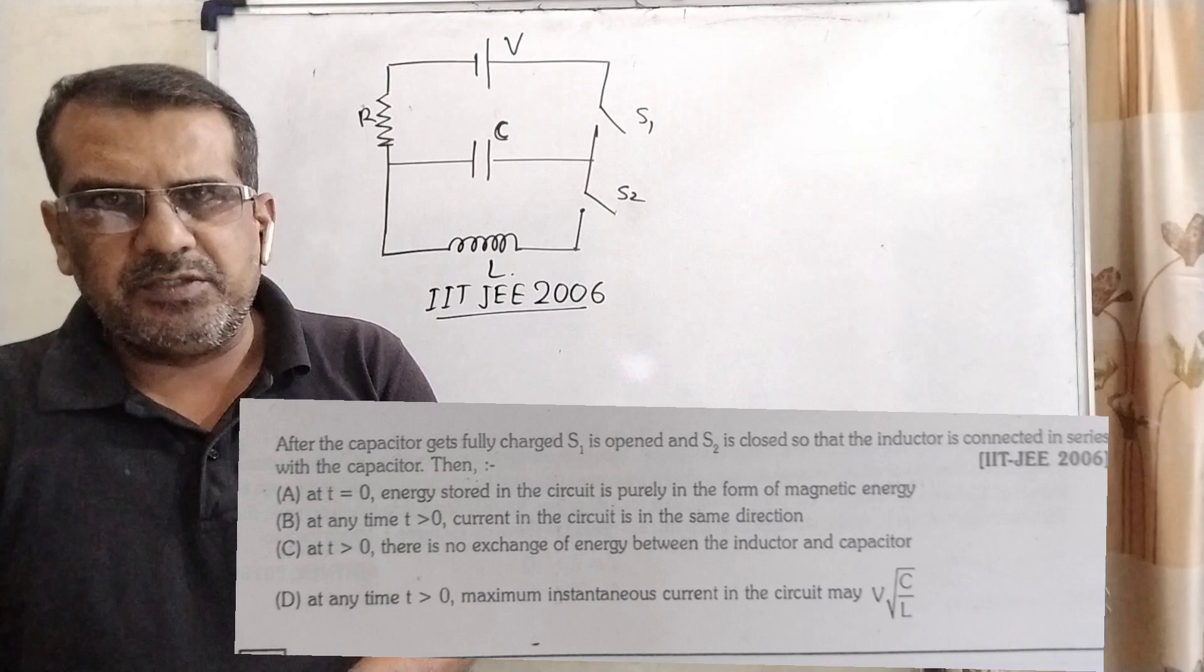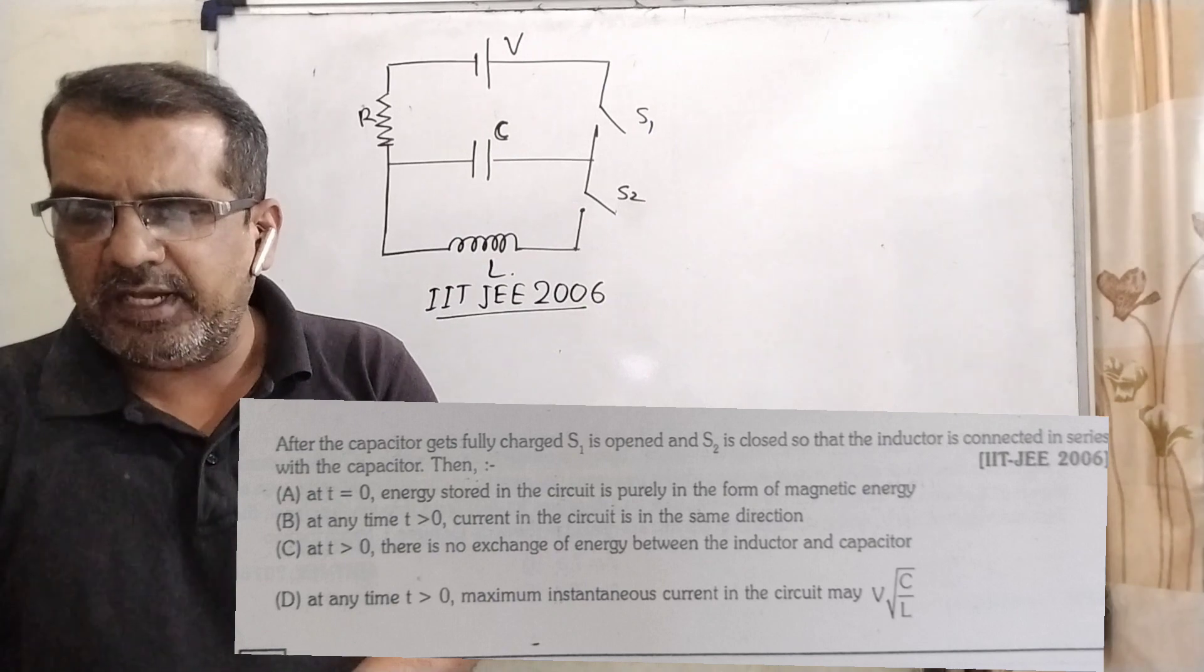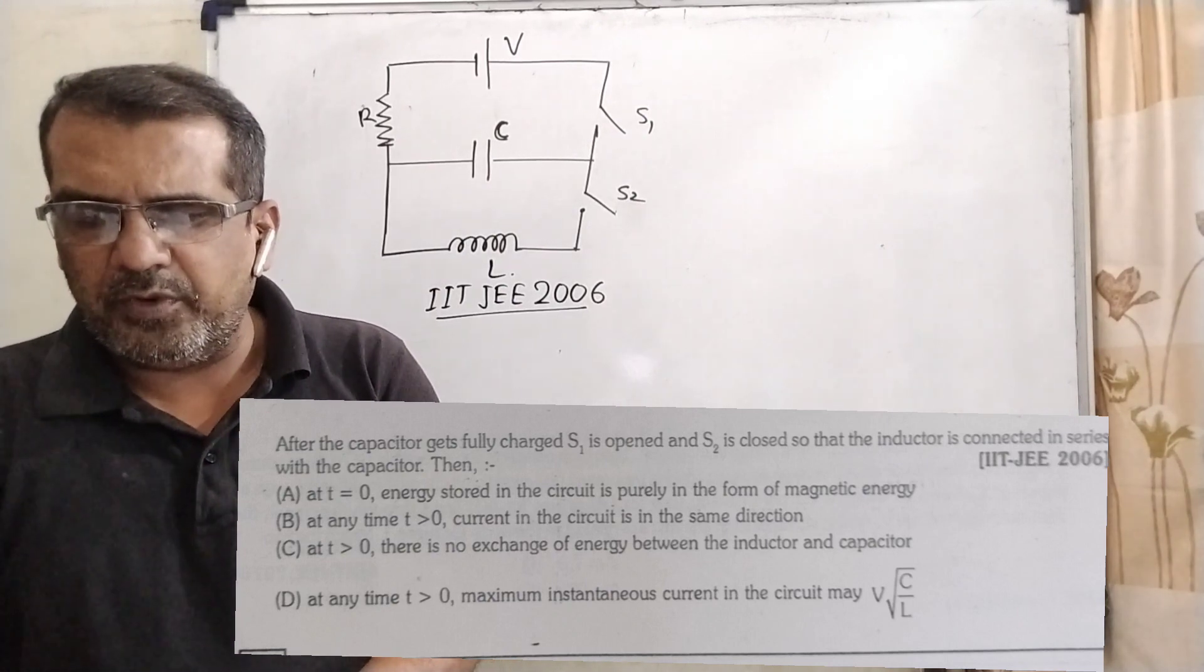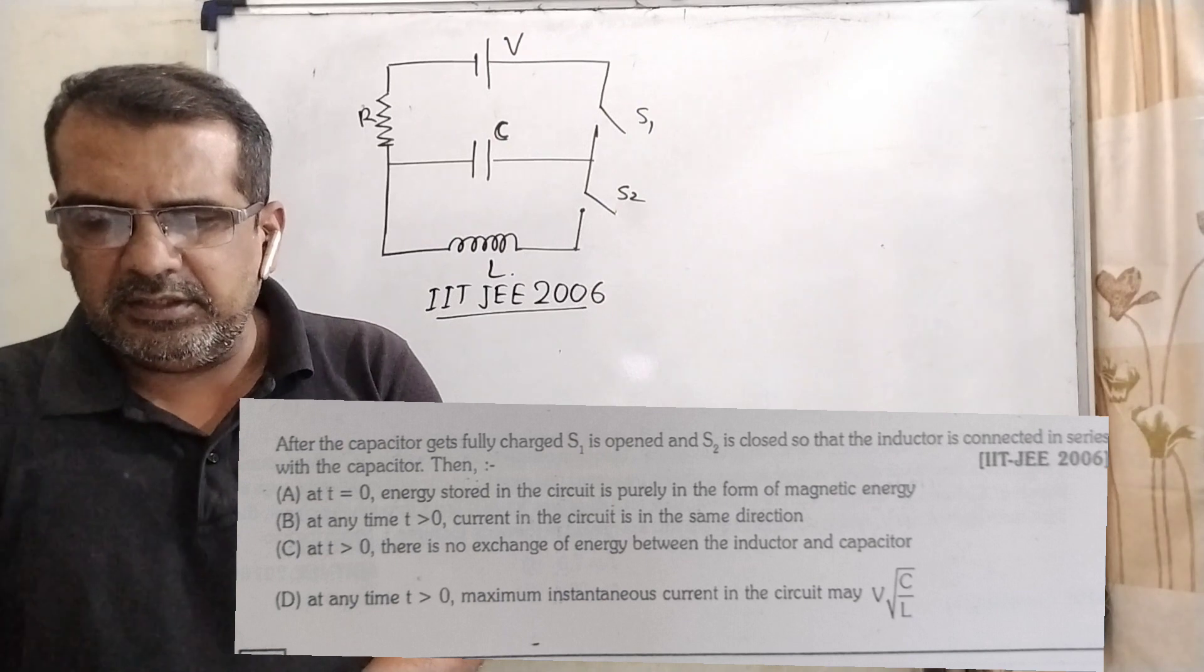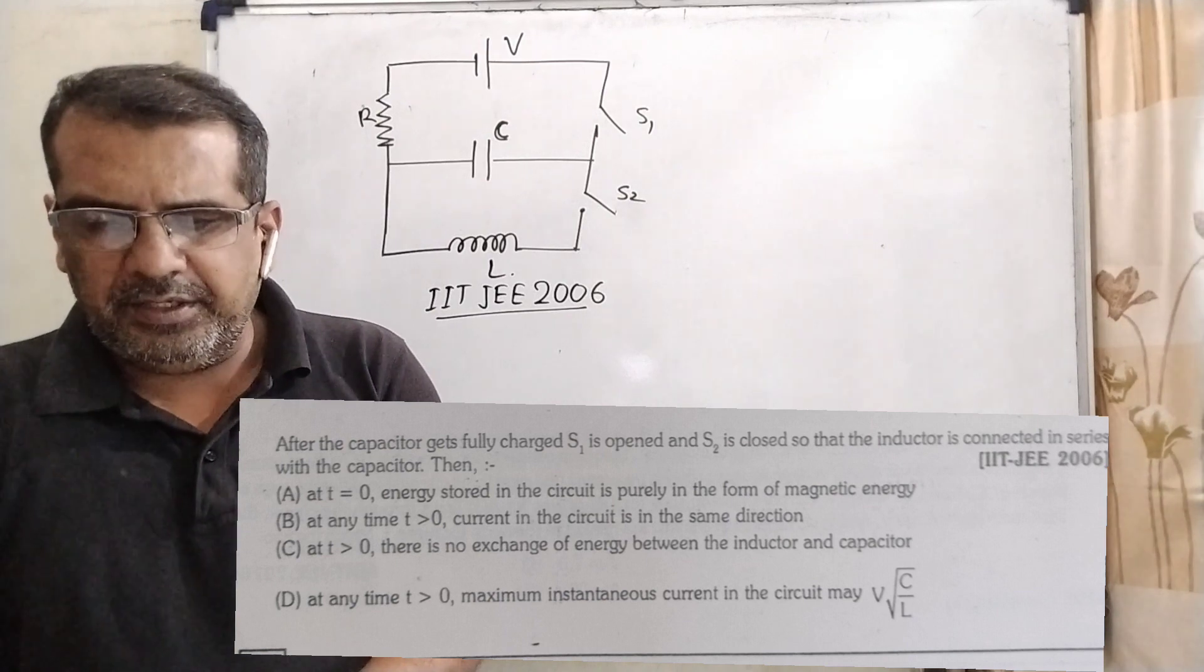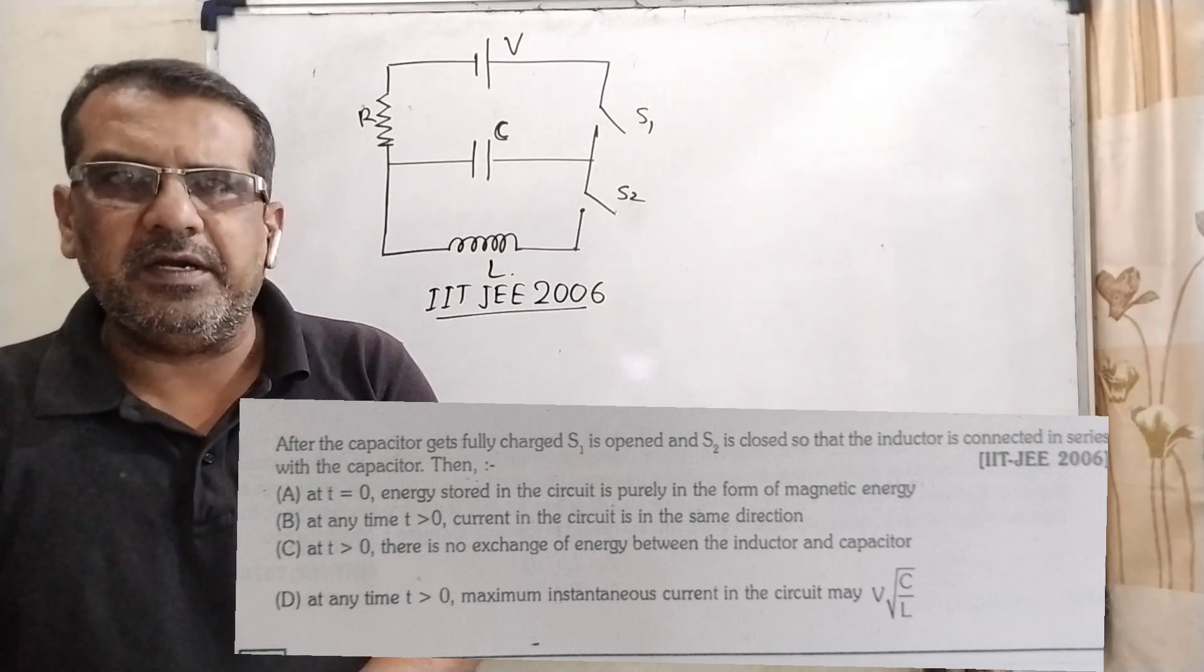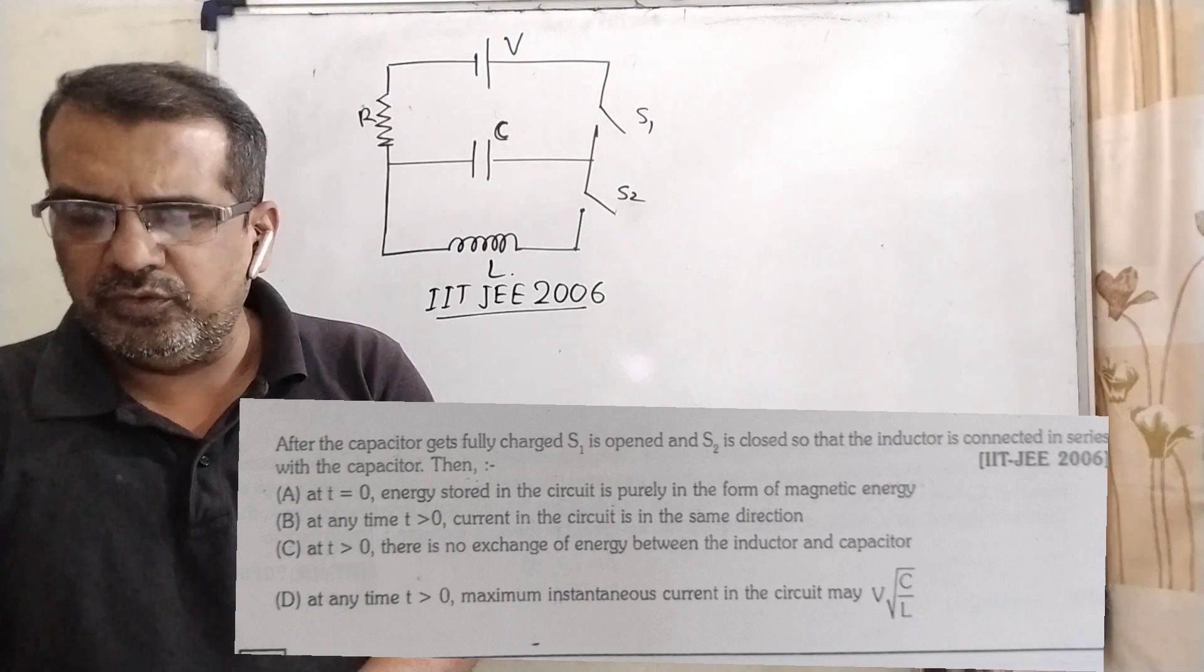Now, next question based on this paragraph. After the capacitor gets fully charged, S1 is opened and S2 is closed so that the inductor is connected in series with the capacitor. Here are options. A: At t equal to 0, energy stored in the circuit is purely in the form of magnetic energy. Option B: At any time t is greater than 0, current in the circuit is in the same direction. Option C: At t is greater than 0, there is no exchange of energy between the inductor and capacitor. And option D: At any time t is greater than 0, maximum instantaneous current in the circuit may be V into root C by L.